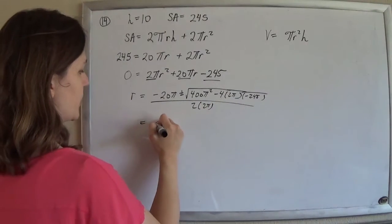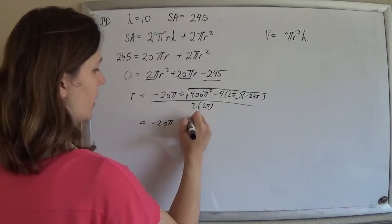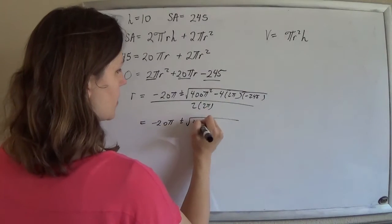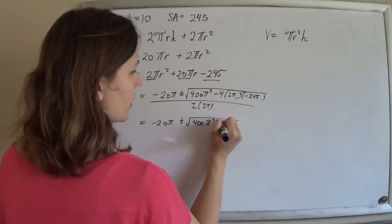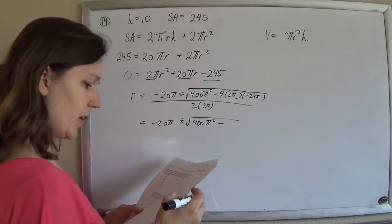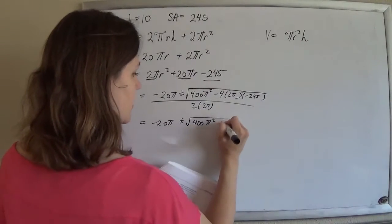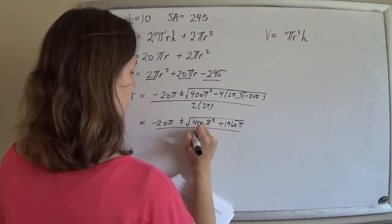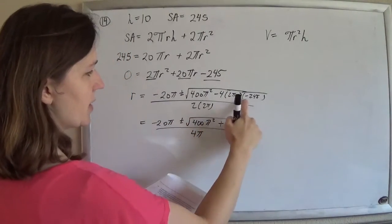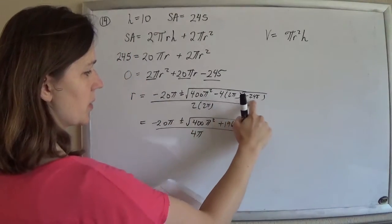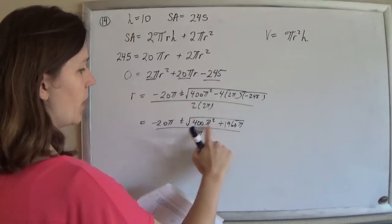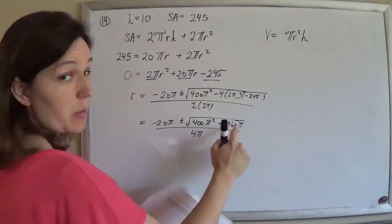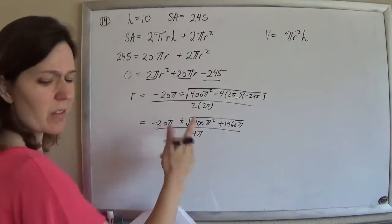And when you simplify this, plus or minus, that's 400 pi squared, and then that ends up being plus 1960 pi, and then that's all over 4 pi, so the minus minus made a plus. 4 times 2 times 245 was 1960. You can't combine those, because that's pi squared and that's pi, so that's as good as it gets.